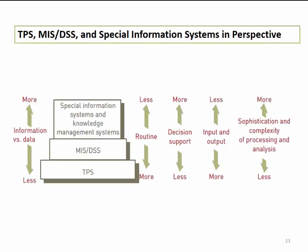Now let's look at some contributing factors that relate to each of these systems. Looking at this image, it initially seems a bit confusing but is actually quite easy to understand. Regarding information versus data: TPS systems will use less information but generate more data. Going upwards to more specialized systems, special information systems and knowledge management systems would have more information but less data.